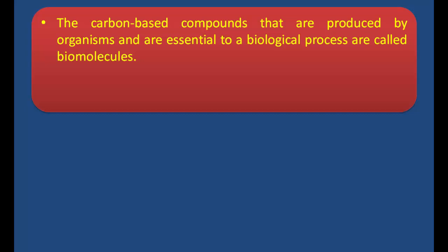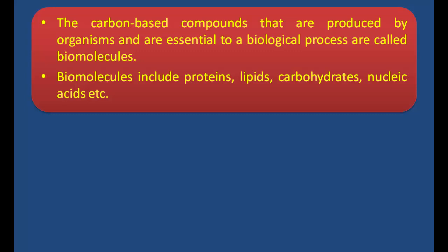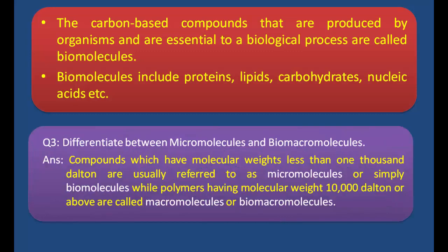Key point: The carbon-based compounds that are produced by organisms and are essential to a biological process are called biomolecules. Biomolecules include proteins, lipids, carbohydrates, nucleic acids, etc. The carbon-based compounds made by organisms that are essential for biological processes are called biomolecules. Examples of biomolecules include proteins, lipids, carbohydrates, amino acids, glucose, nucleotides, and fatty acids.